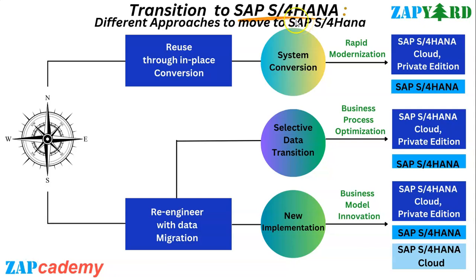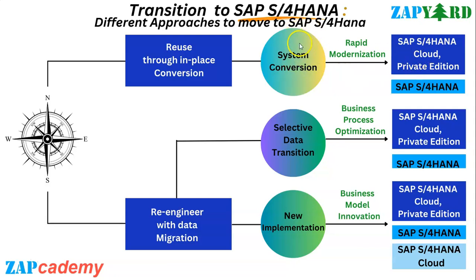There are a couple of things that need to be considered. Either we are happy with the current business process, or do we want to reimplement in order to adopt a standardized business process. If we want to reuse our existing business process, then system conversion is the transition approach, also known as brownfield implementation. But if you want to re-engineer your business process completely, then new implementation may be the transition approach.